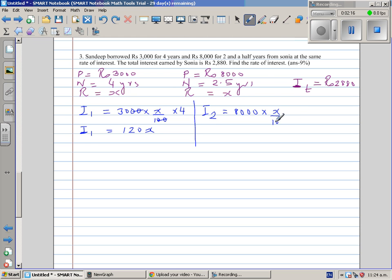And 2.5 I'm writing as 25 over 10. So this 100 and this 0 gets cancelled. Your I2 is 25 times 8, which is 200x.